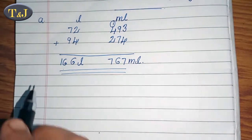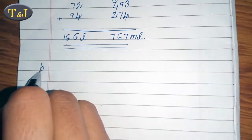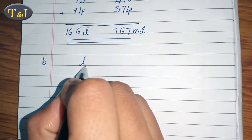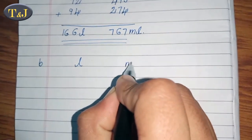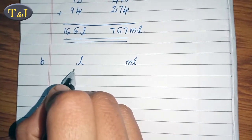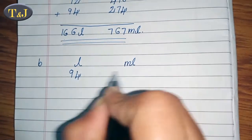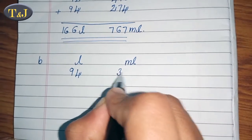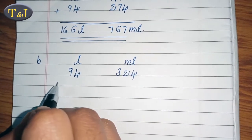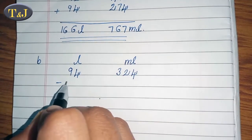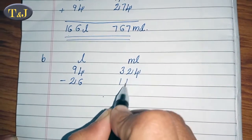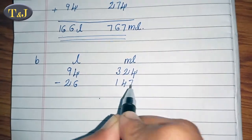Our next example is subtraction of capacity. First we write the units of capacity: liter and milliliter. Then 94 liter 324 milliliter minus 26 liter 147 milliliter.